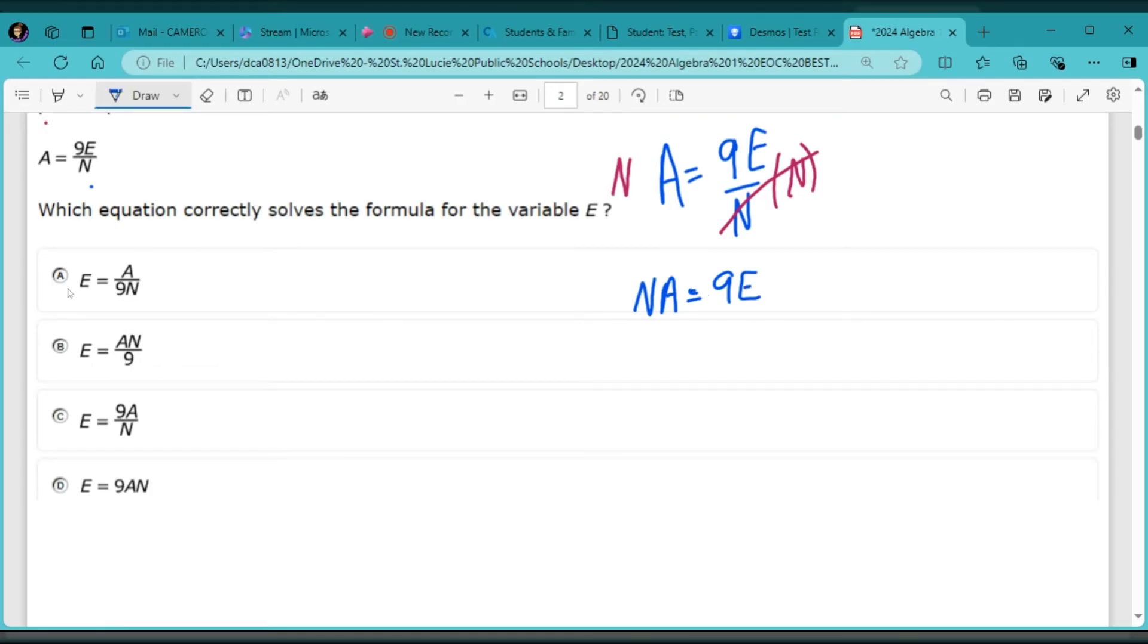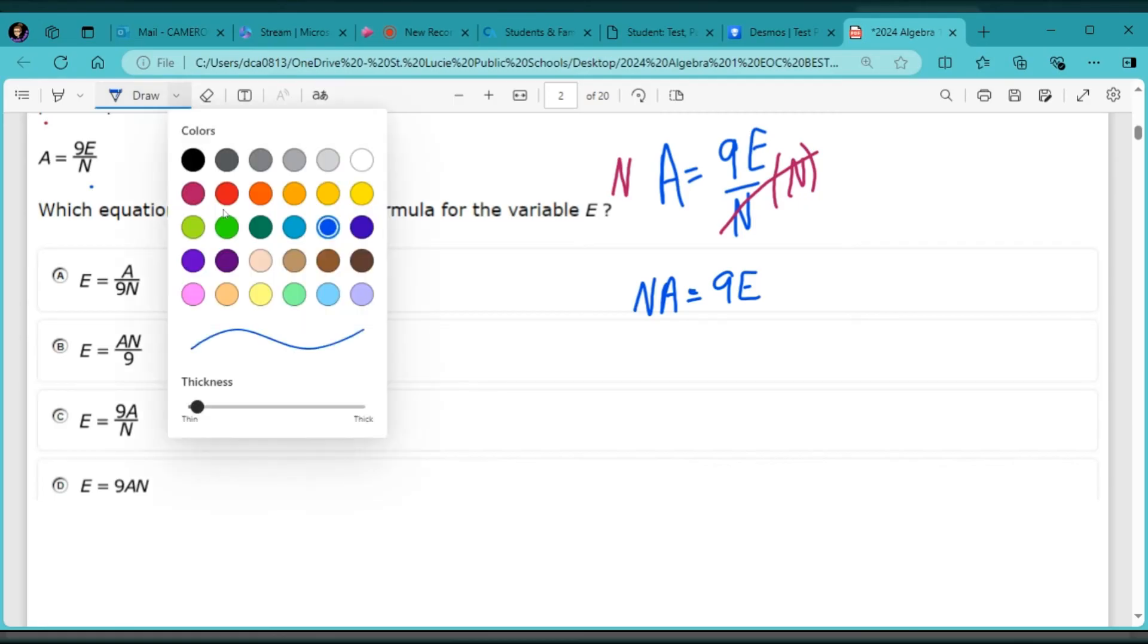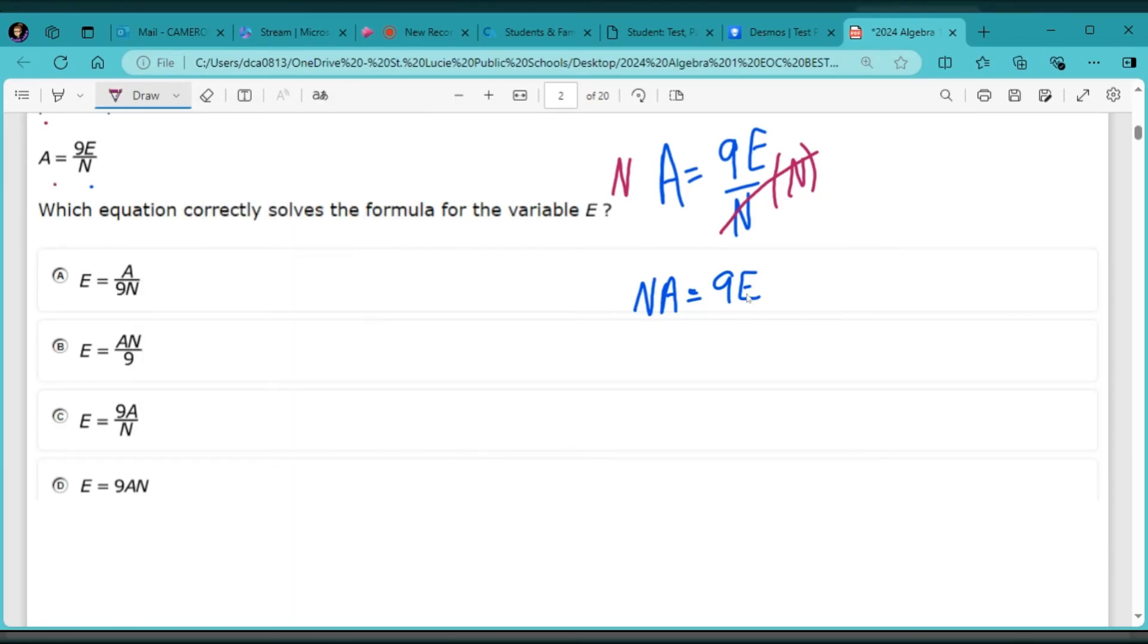And I still want to get the E isolated, the E only by itself. What's with the E? It's a 9. What is the 9 doing with the E? There's no addition or subtraction sign. There's no fraction, which means the 9 and the E are multiplying. What is the opposite of multiplication? It is division. So if I want to cancel out my 9 and leave the E, then I need to divide by 9. And properties of equality says, whatever I do on one side of the equal sign, I have to do on the other. That's going to make my 9's cancel out.